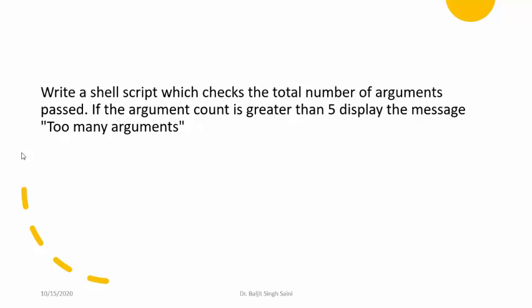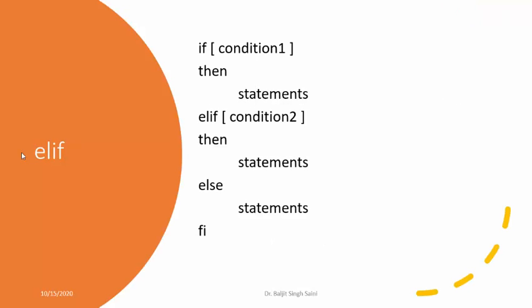The next thing is the use of elif in shell scripting. Elif is used whenever you want to check a condition multiple times. The general syntax: start with if, write the condition, then the statements. Now elif — if the first condition is not true, you want to check another condition. You write elif (not 'else', only 'el' and then 'if') followed by the second condition, then the statements. You can chain as many elif as needed. Finally, there will be an else part, and you close with fi.